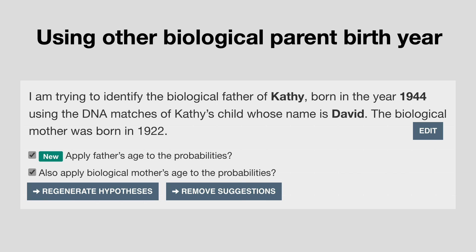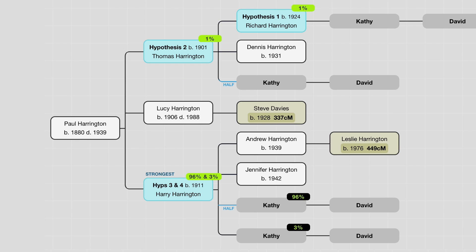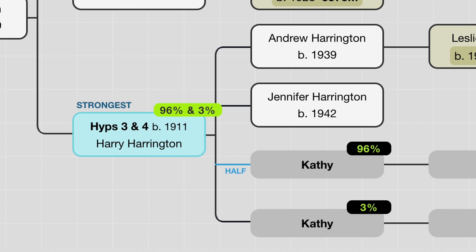In this case David knows that his biological grandmother was born in 1922, so if he checks both boxes to use the father's age and the biological mother's age, we can see that this makes the case for Harry Harrington being the father of Kathy even stronger. So you might ask: does this 96% really mean that there's a 96% chance that Harry was the father? And the answer is not exactly. 96% is the relative probability — that means that out of all the hypotheses in the tree, this one has a 96% probability, based on the DNA matches entered and also in this case the age of the parents.